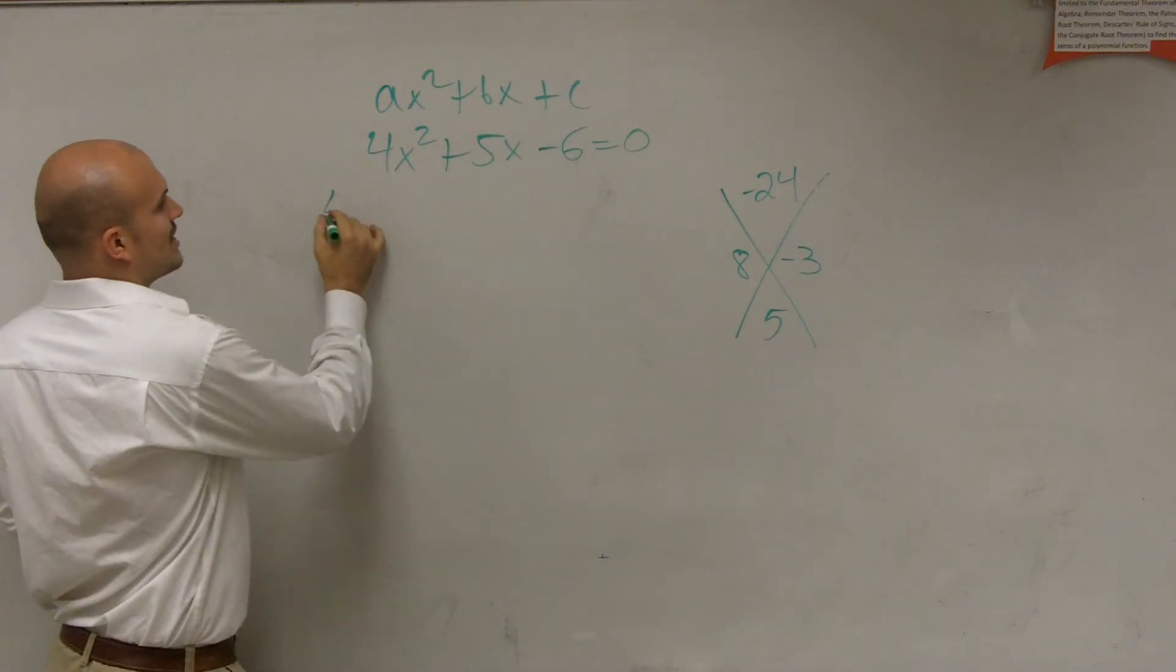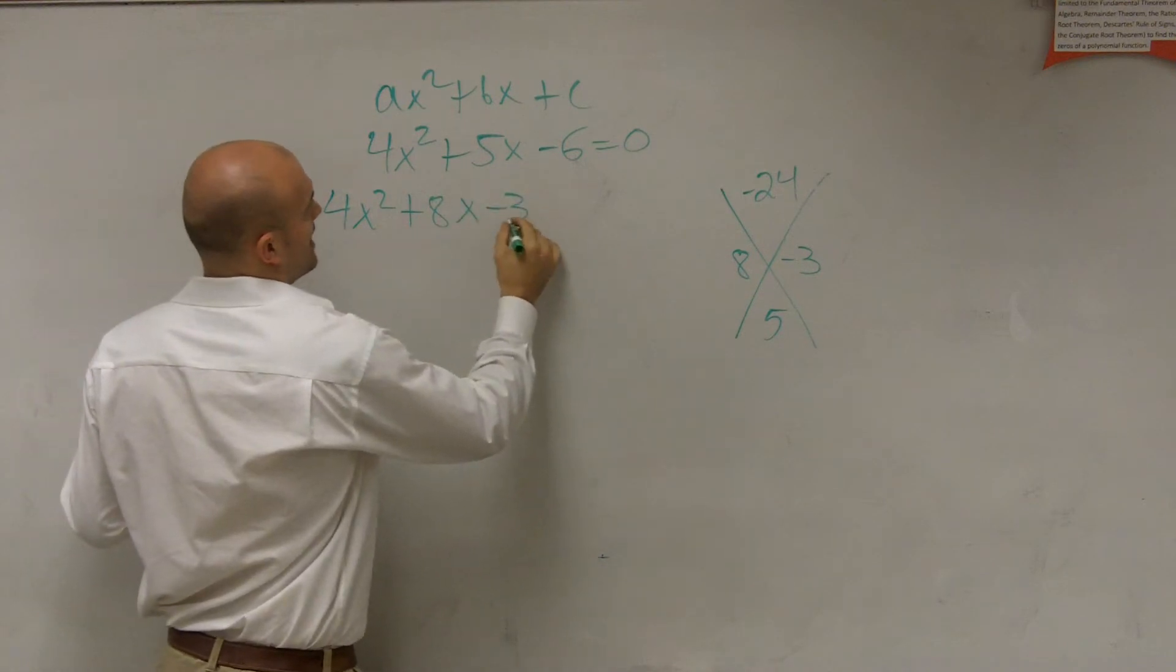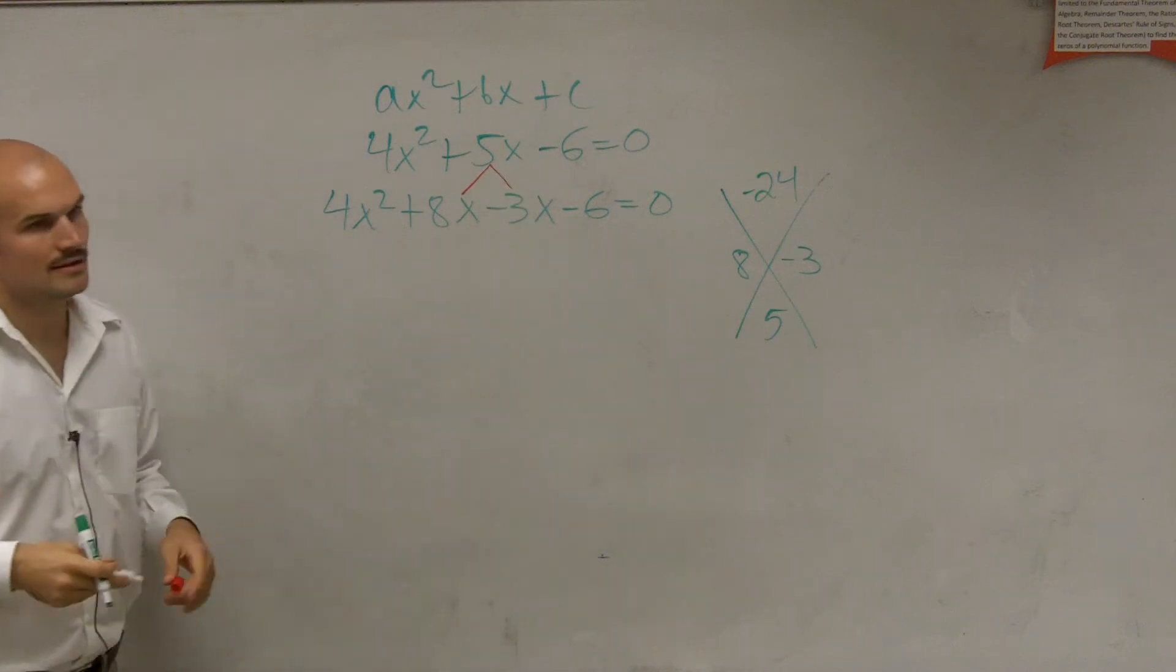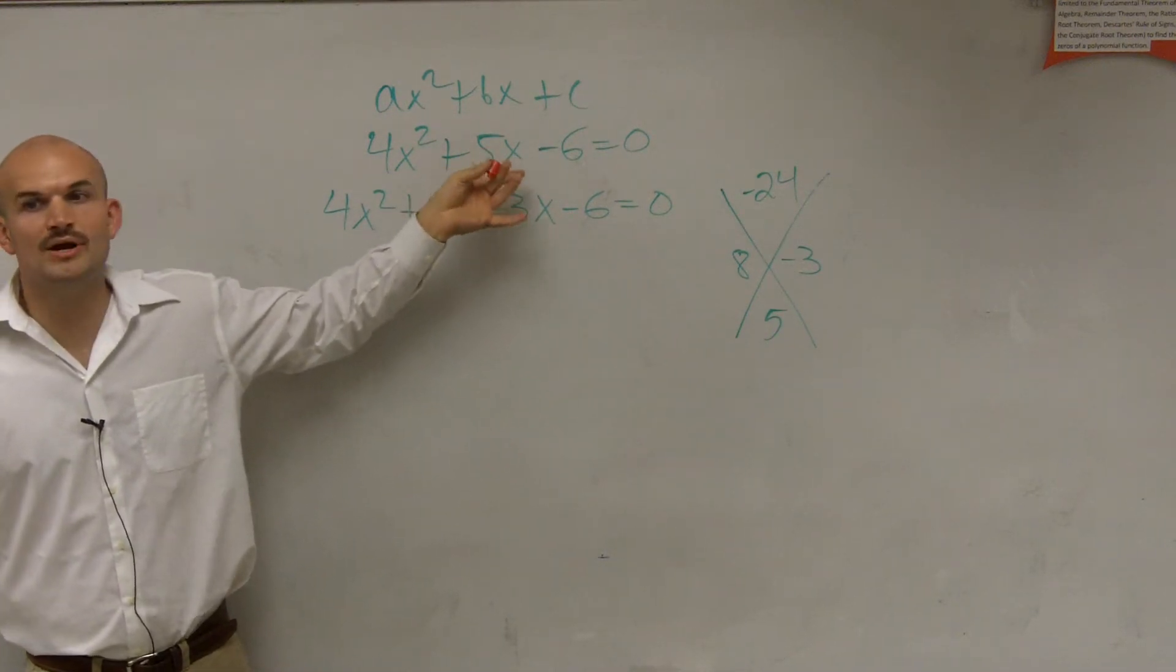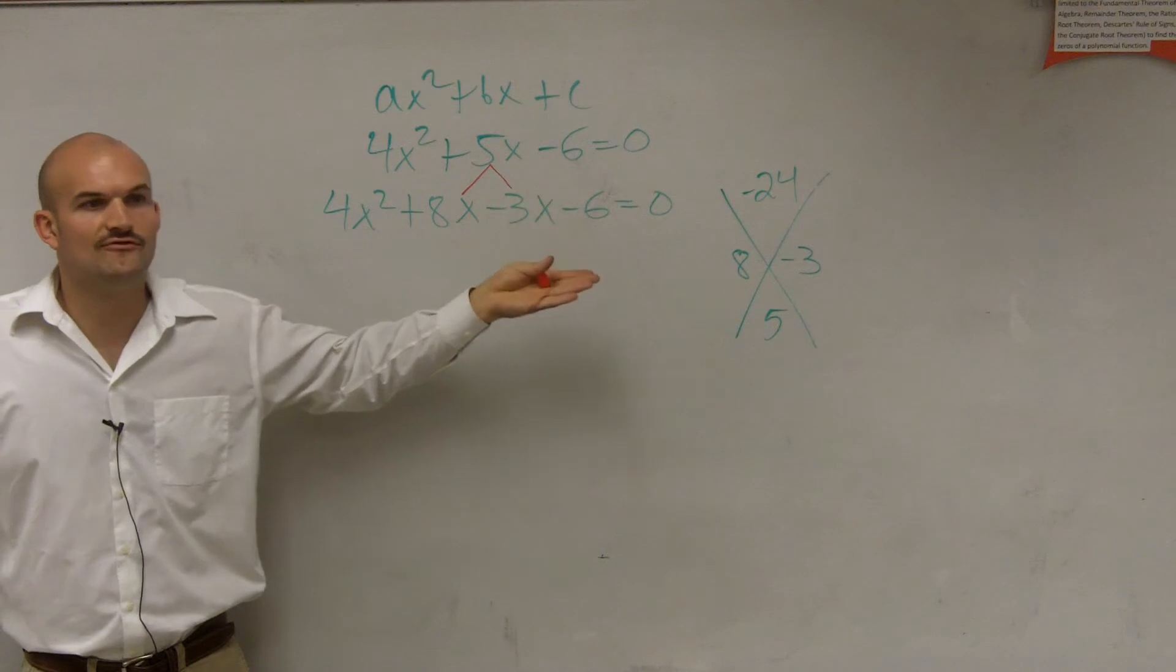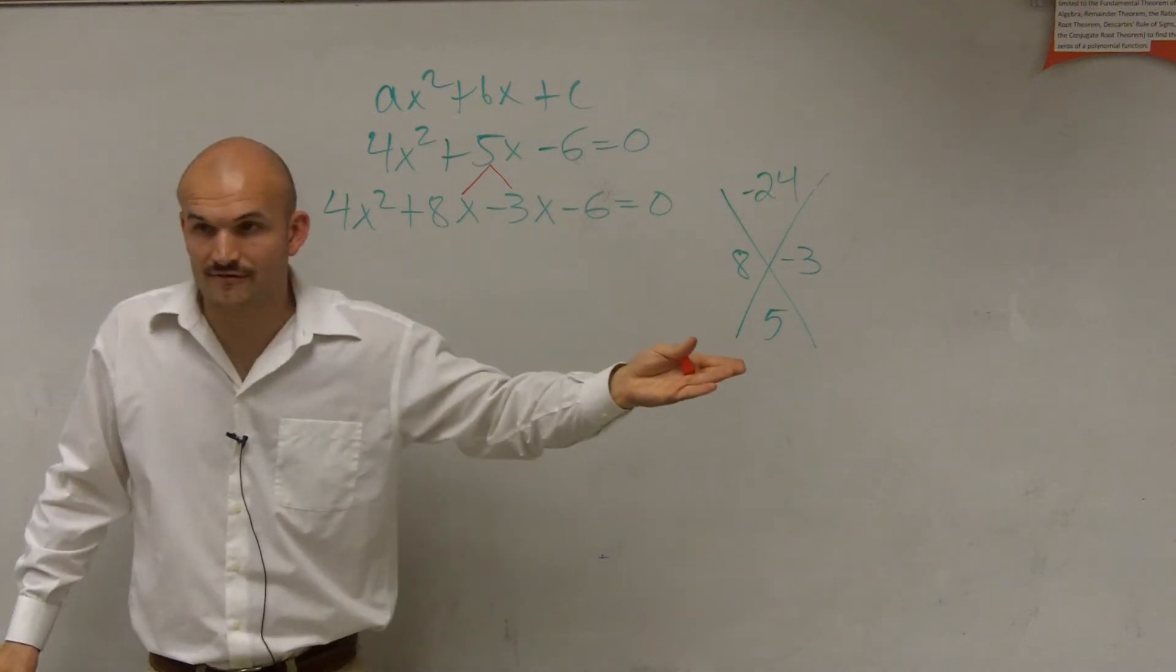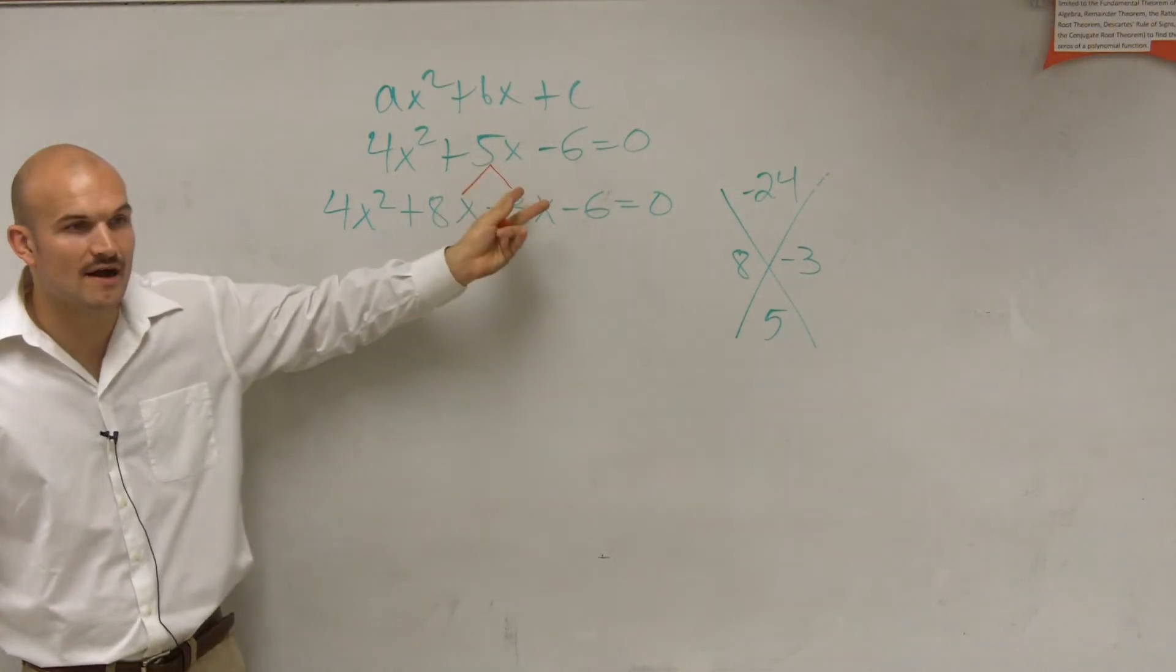So then I rewrite my equation. 4x squared plus 8x minus 3x minus 6 equals 0. Is there a numeric difference, is there a value difference in these two equations? No. Could you say 4 is equal to 2 plus 2? Yeah. They look different, but their value is the same, right? Is 8x minus 3x the same as 5x?